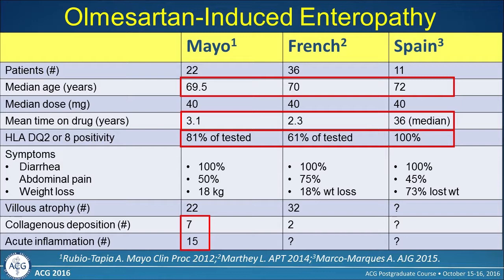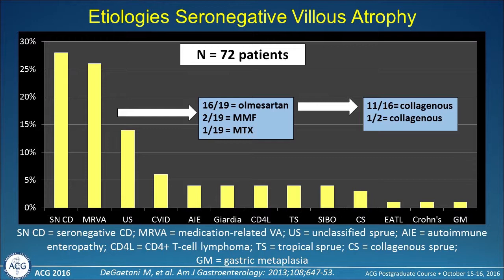Interestingly, in the studies that did HLA testing, many of these patients had permissive celiac gene pairs, suggesting those with permissive celiac genes may be more susceptible to this drug-related side effect. Diarrhea was universal, as well as abdominal pain and weight loss. In the Mayo study, a third of patients had significant collagen deposition in the small bowel, and two-thirds had acute inflammation in the biopsy — which is typically not seen in celiac disease. Going back to the study, 16 of 19 medication-related villus atrophy cases were on olmesartan, and 11 of those 16 had significant collagen deposition.